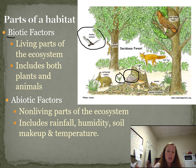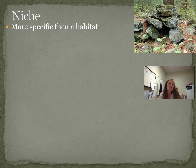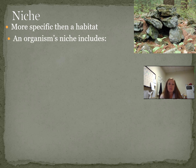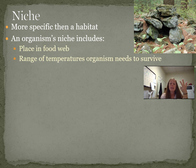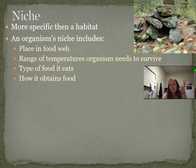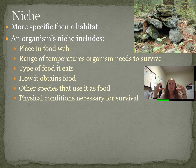Now we're going to talk about the niche, which is more specific than a habitat. A niche is exactly where one organism lives. It includes their place in the food web, the range of temperatures they need to survive, the type of food they eat, how they get their food, other species that eat its food — so who it competes with — and the physical conditions necessary for survival.